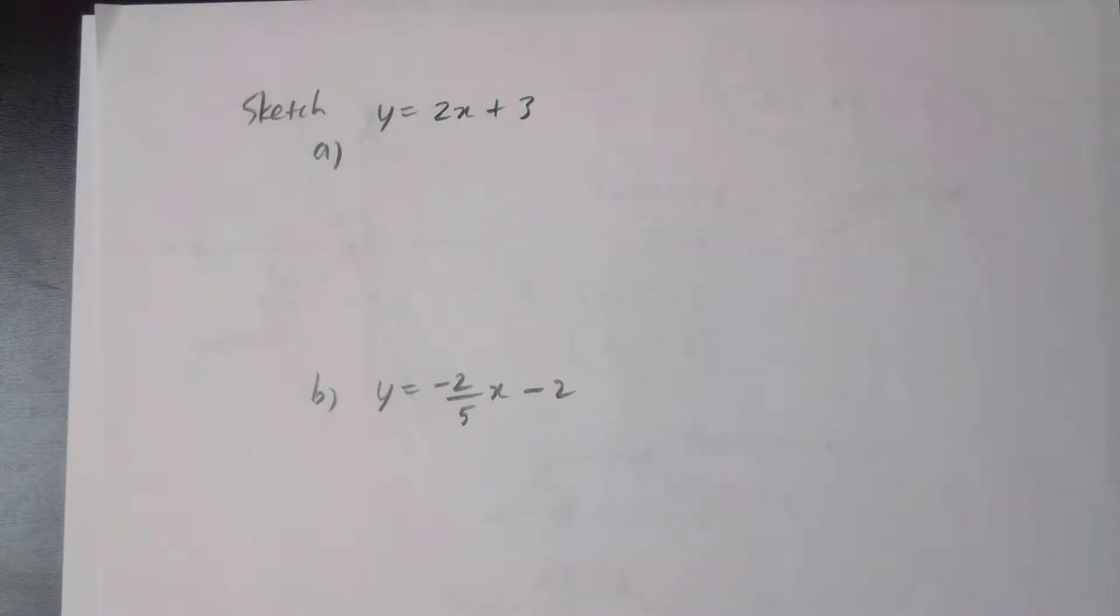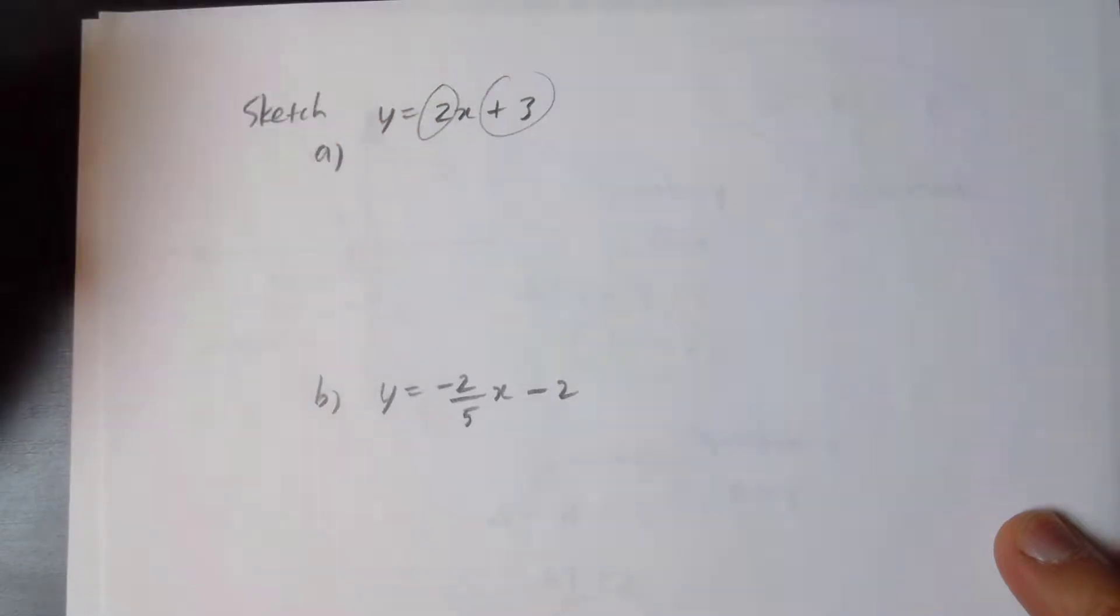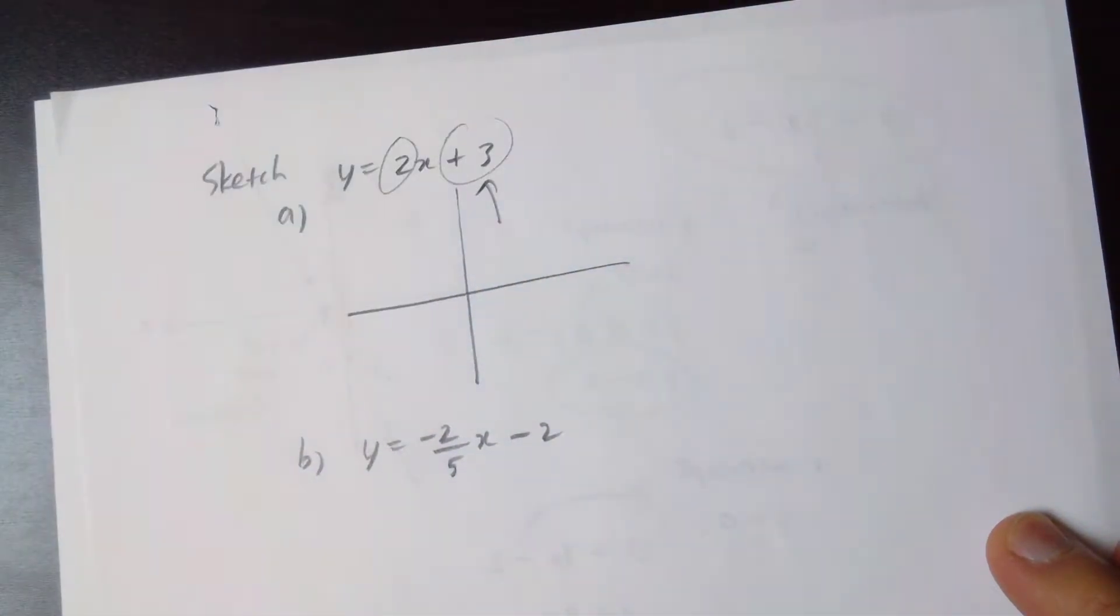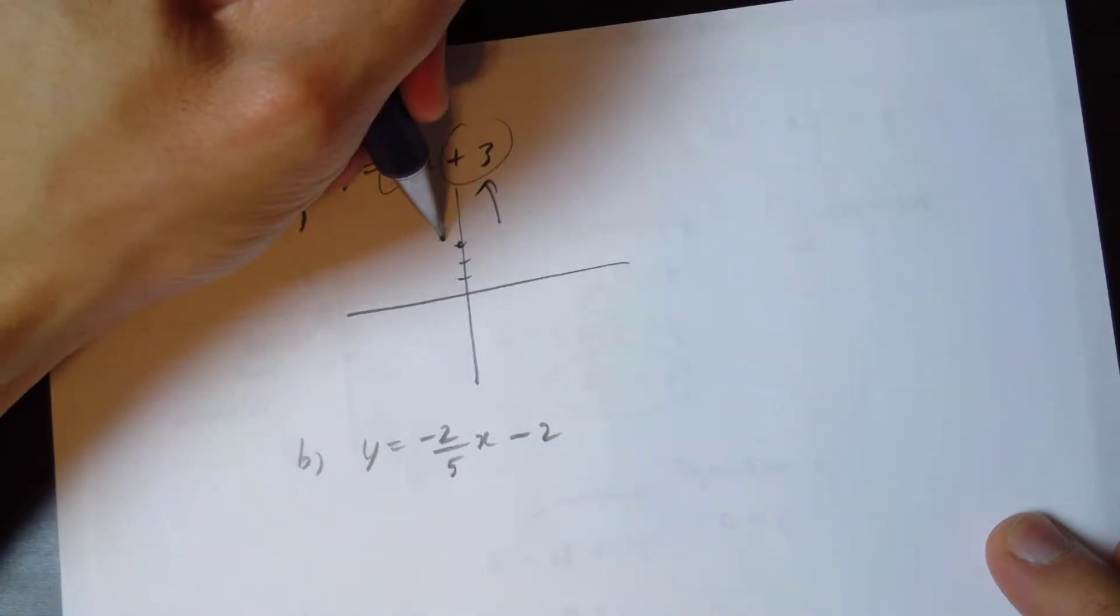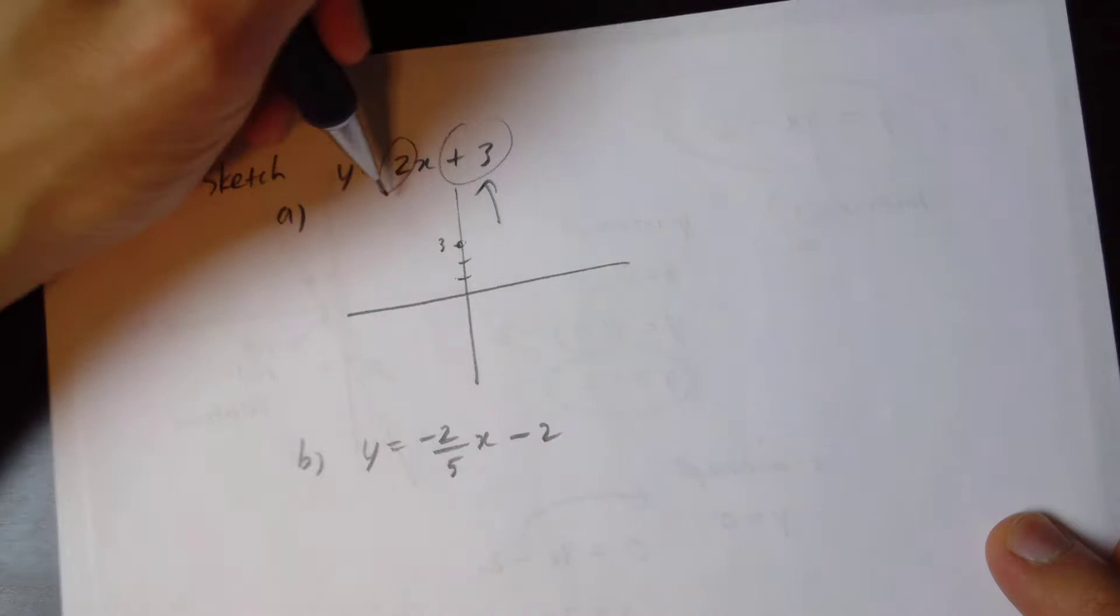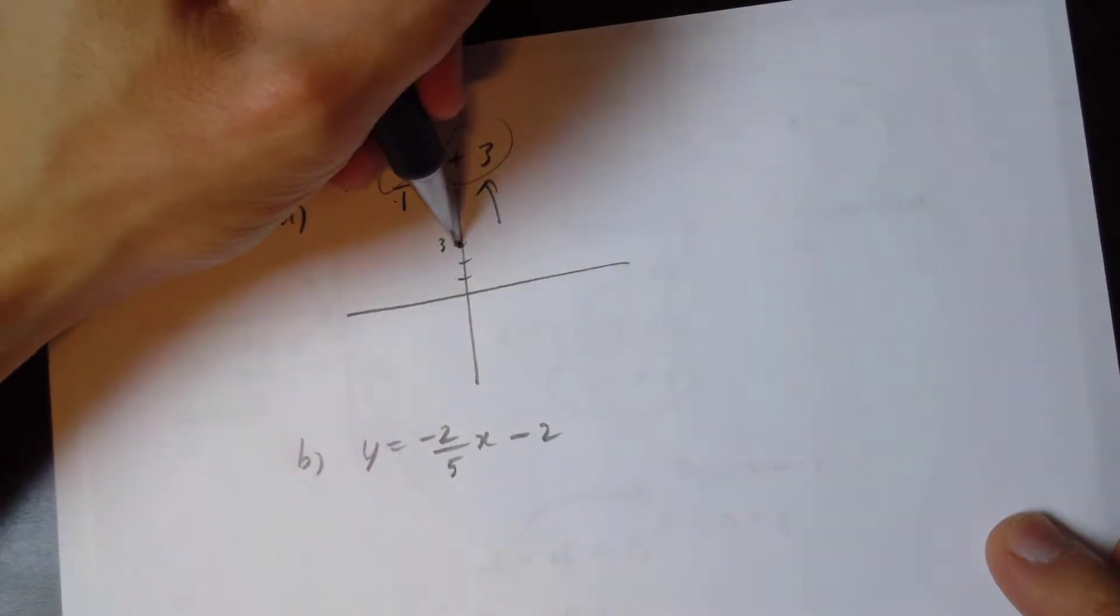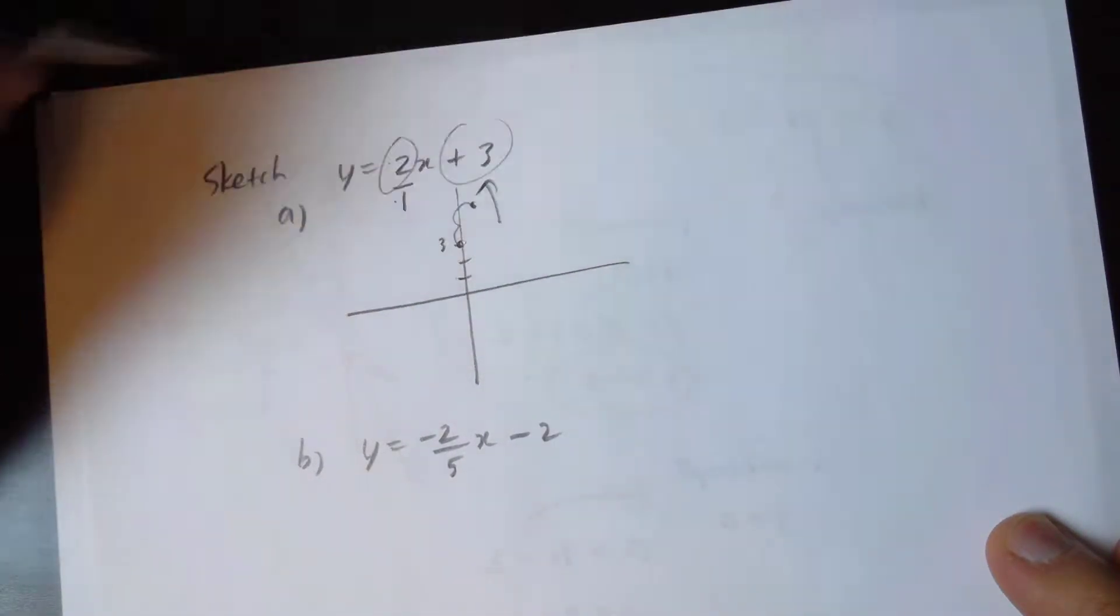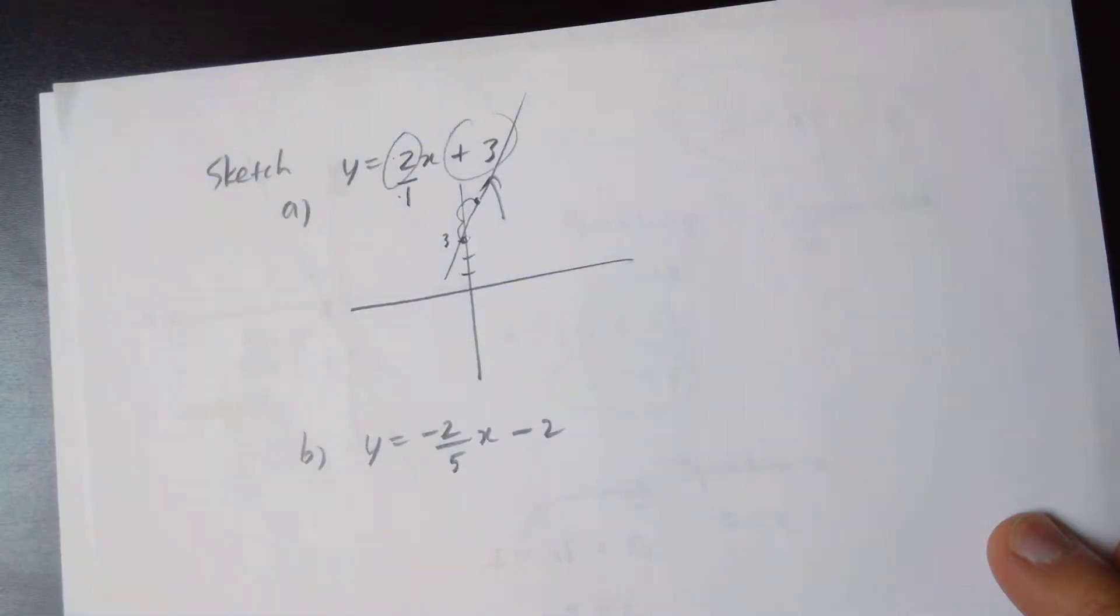Okay, let's sketch some basic lines. We have a slope and we have an intercept. I recommend you attack the intercept first. This is going to be one, two, three. Draw a dot here, and you know this is a three. The slope is two over one, which is rise over run. Positive two means you go up two, and the run of one means you go right to the one. Draw a dot there and then connect the lines. This is a line.